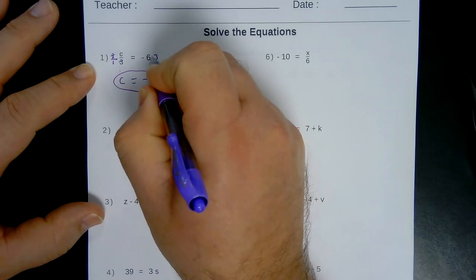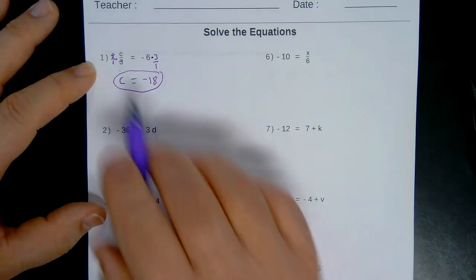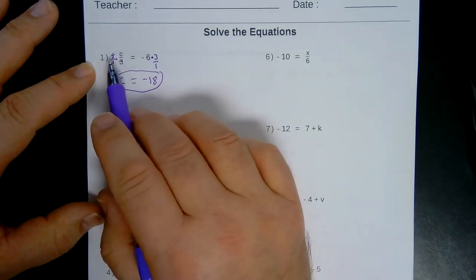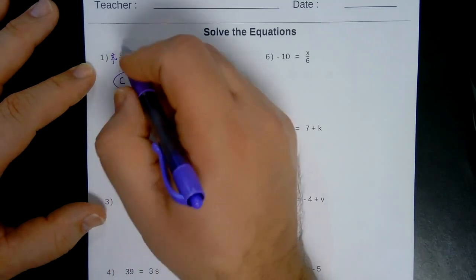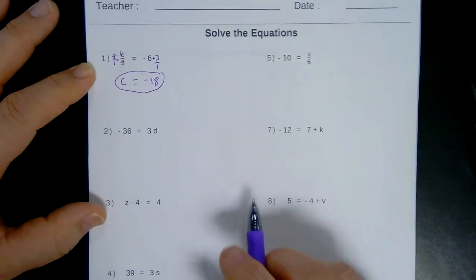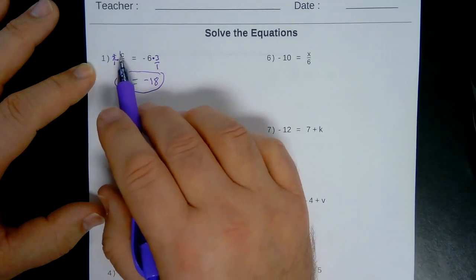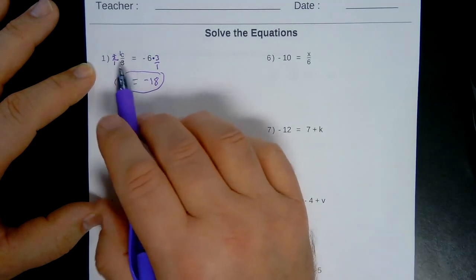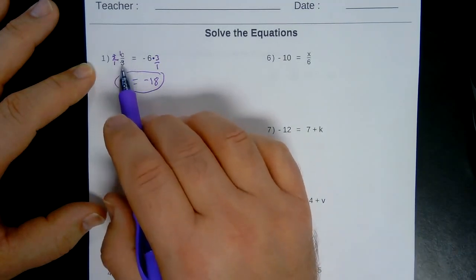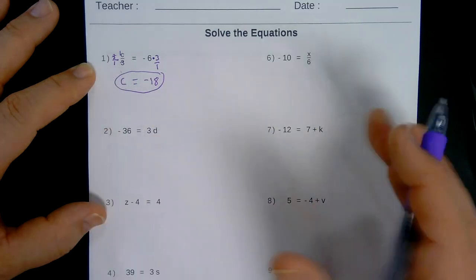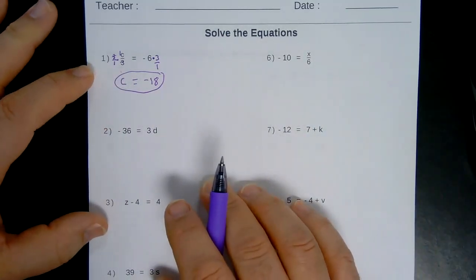That's a multiplication. The opposite of division is multiplication. Some of you may recognize this. If I put a little 1 on the C, it would be like 1 third C. So the reciprocal of 1 over 3 is 3 over 1. So I'm going to multiply both sides by that reciprocal.